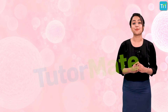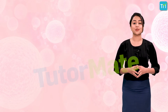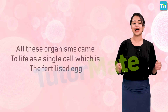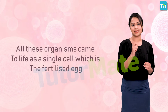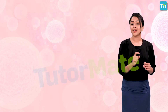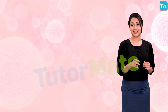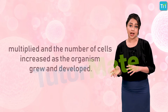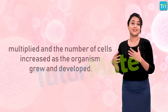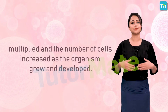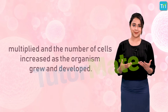But you will be surprised to know that all these organisms came to life as a single cell, which is the fertilized egg. The fertilized egg cell then multiplied, and the number of cells increased as the organism grew and developed.